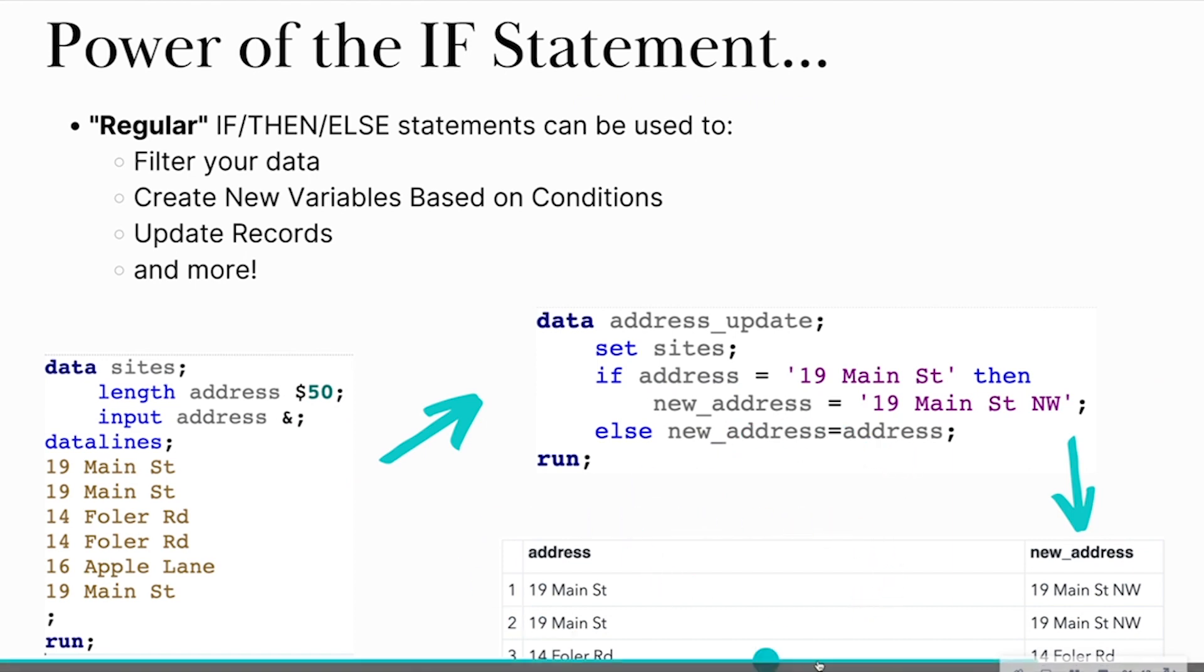And so when I do this, I give this nice little output that you see at the bottom of the screen where all of the new addresses now has the Northwest logic to it. So this is an example of a use case with the if-then-else statements to update the records that we have in our data set.